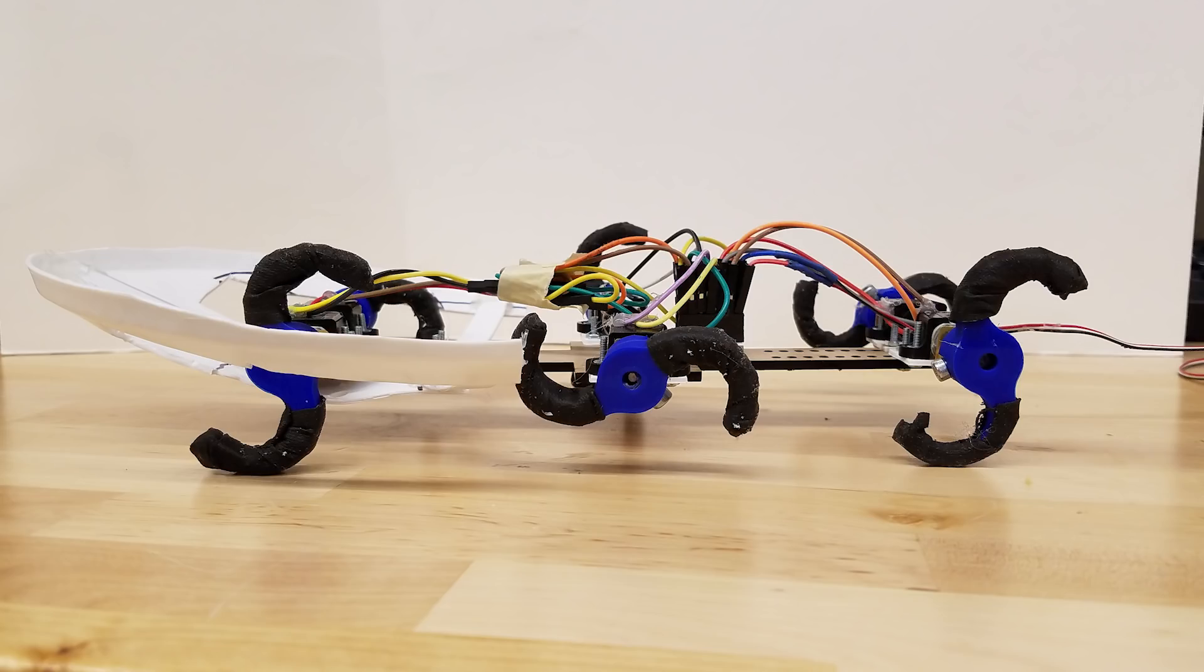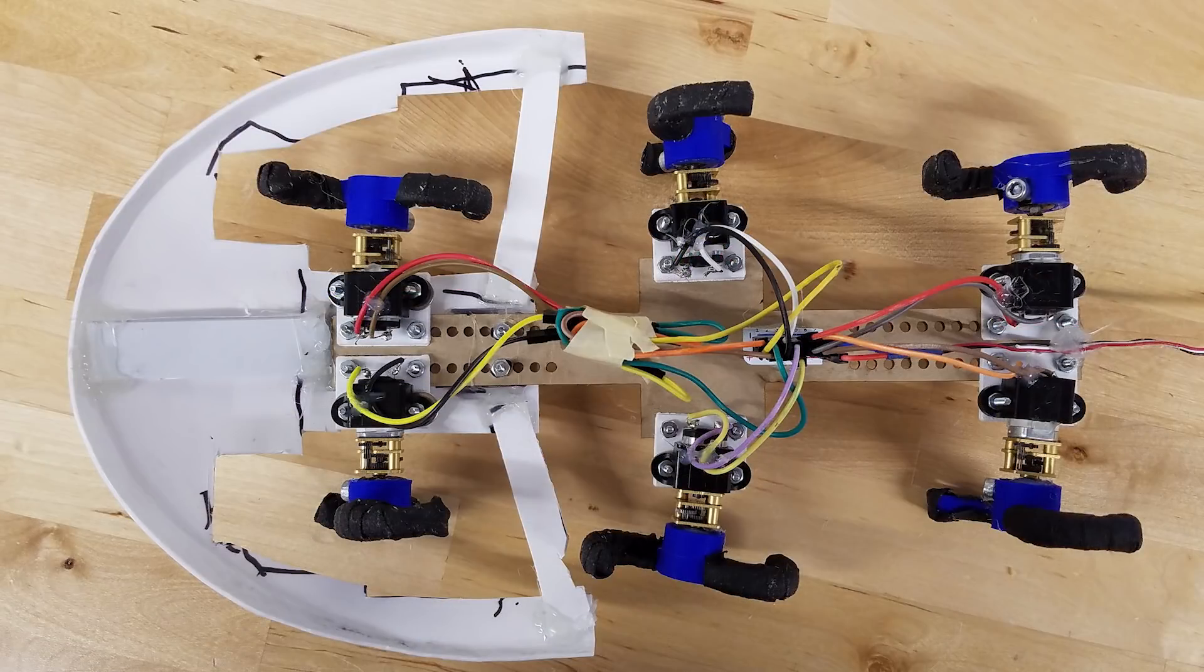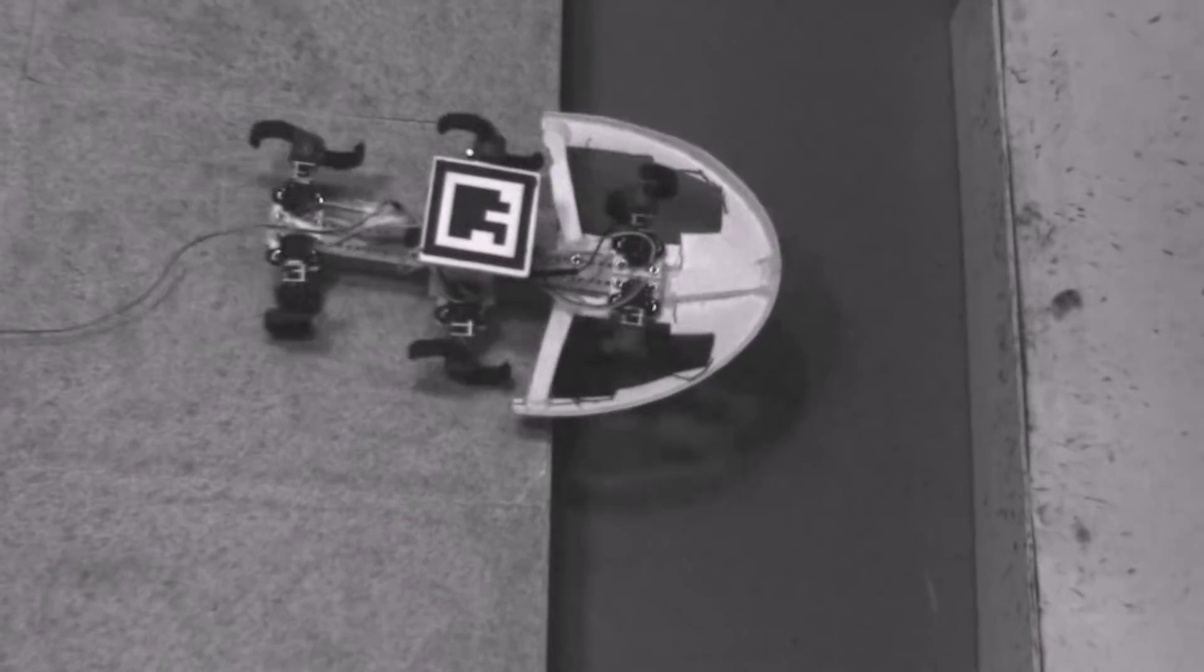So once we did the animal study, we moved to our robot study. This Rex robot which we are using is basically modeled after cockroach, so that is dynamically stable.